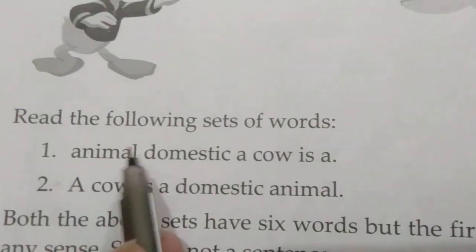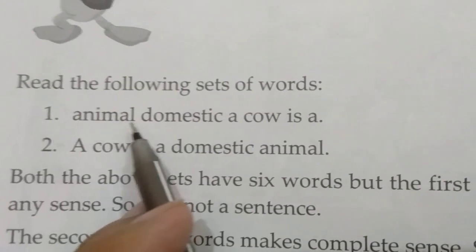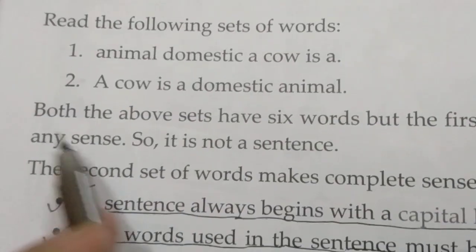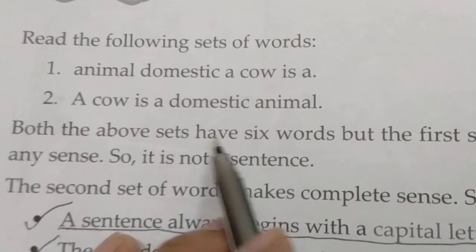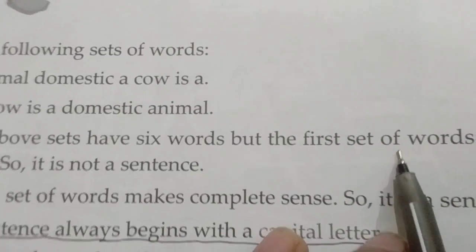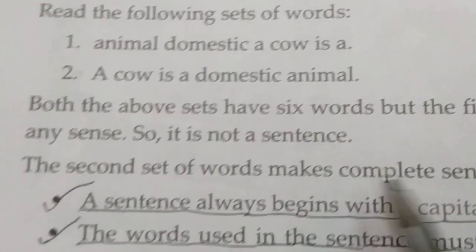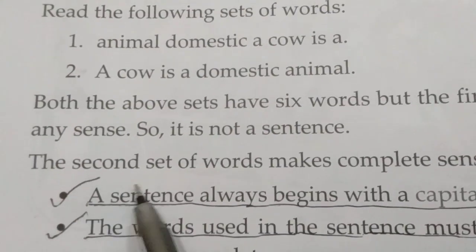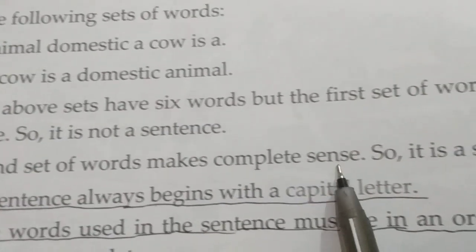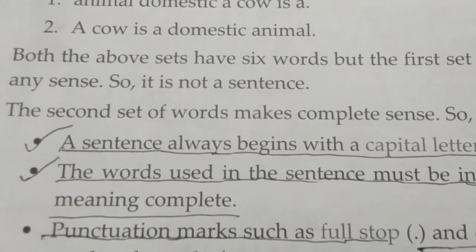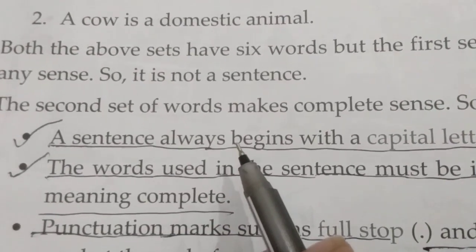Read the following sets of words. First: 'animals domestic.' Second: 'A cow is a domestic animal.' Both sets have six words, but the first set of words does not make any sense, so it is not a sentence. The second set of words makes complete sense, so it is a sentence. A sentence always begins with a capital letter.